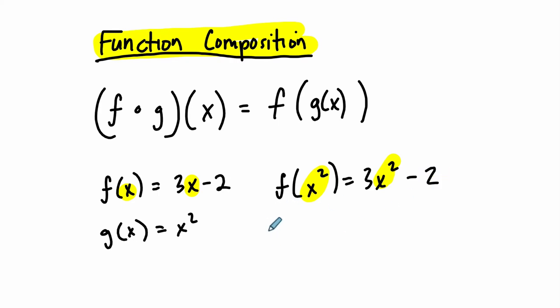And then if I said, well what is g composed of f? Well you compose g with f of x, so your input would now be 3x minus 2, and then you would take 3x minus 2 and square it and simplify it, and that would be an entirely different result.